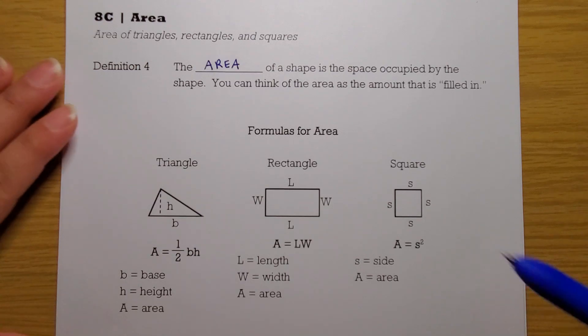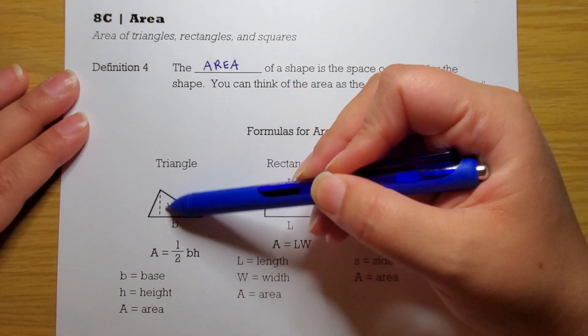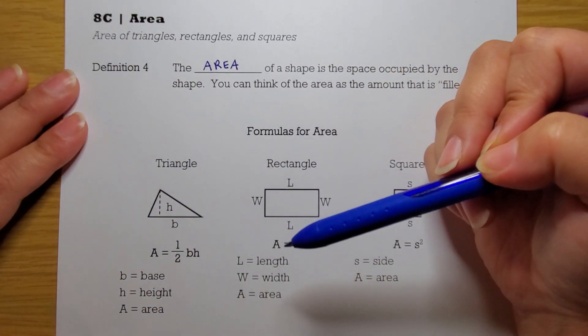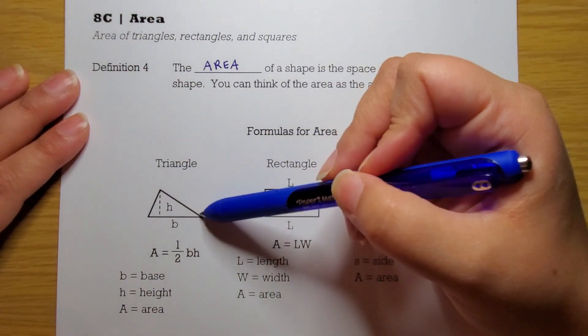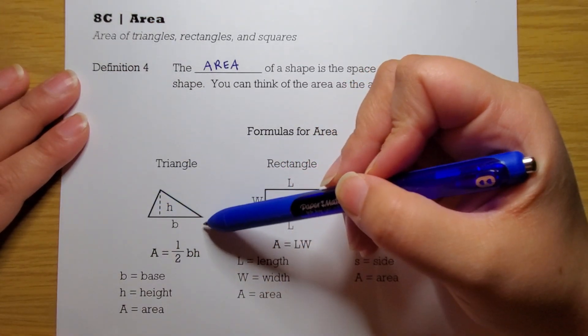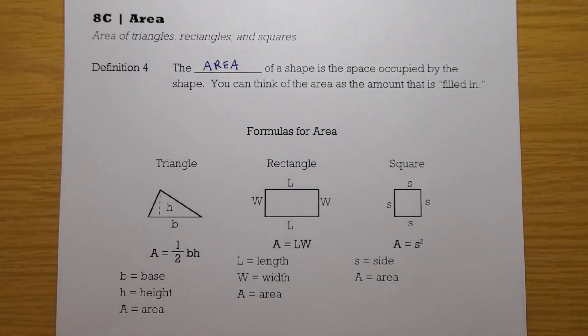For example, here if I were to paint in this triangle, that would be the area. Versus the perimeter, which is the distance walking around. With perimeter, we can remember that general idea of distance around a shape. But for area, we do have to remember these specific formulas because the formula for area is going to be different depending on the shape.